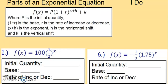Parts of an exponential equation. We have f(x) = P(1+r)^(x+h) + k. Where P is the initial quantity, (1+r) is the base, r is the rate of increase or decrease, (x+h) is the exponent, where h is the horizontal shift and k is the vertical shift, just like we were looking at quadratic functions earlier.